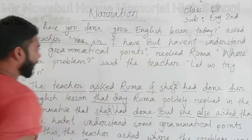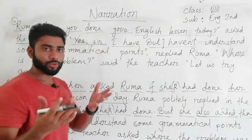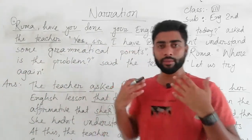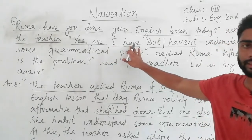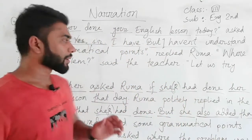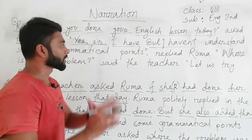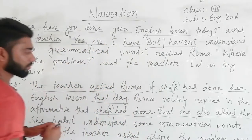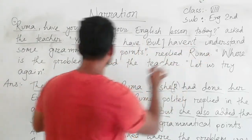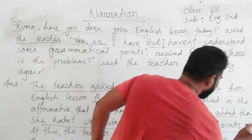But she said she hadn't understood — 'haven't' becomes 'had not' in reported speech. She had not understood some grammatical points. So the reported form is: she had not understood some grammatical points. She had not understood the same grammatical points, and she told the teacher this was the problem.